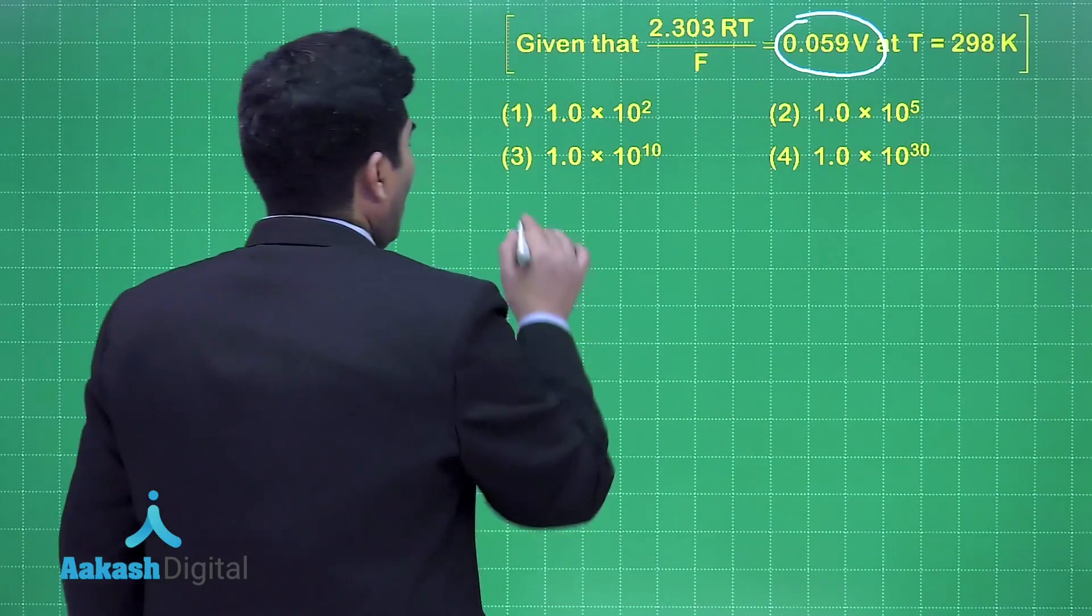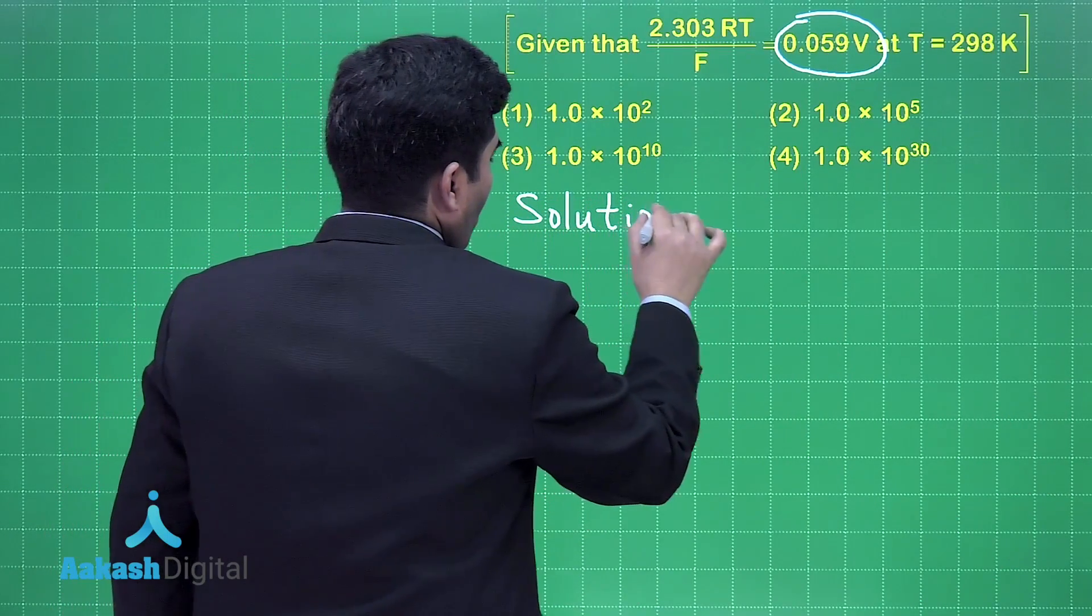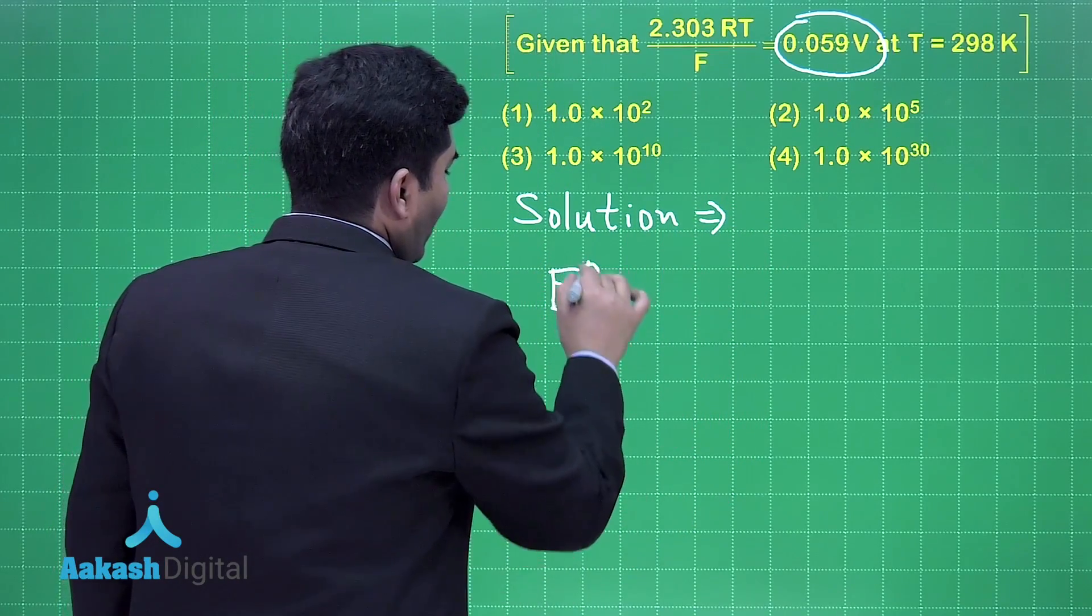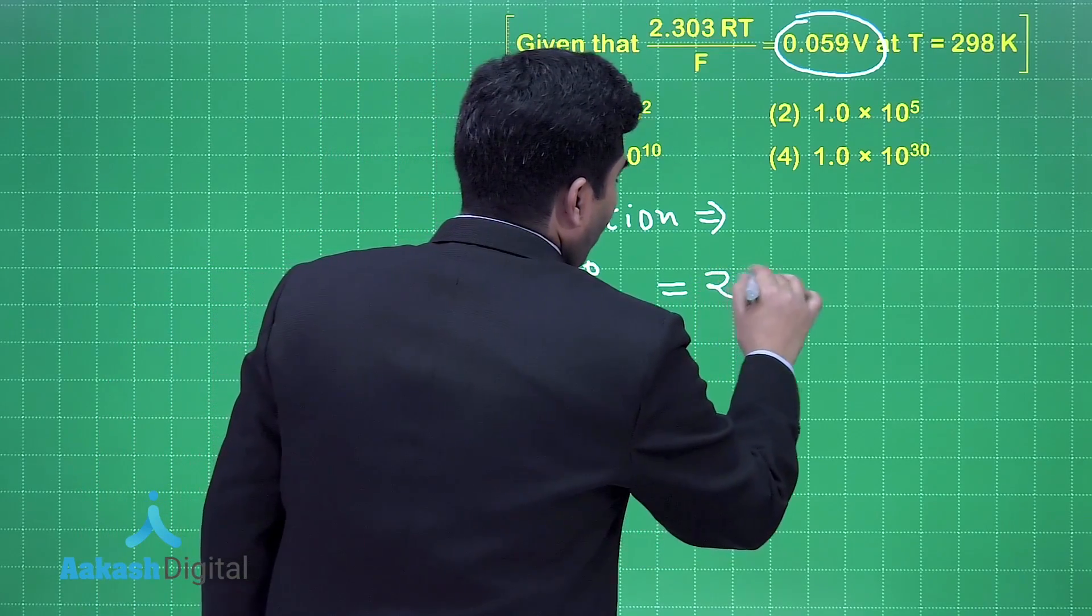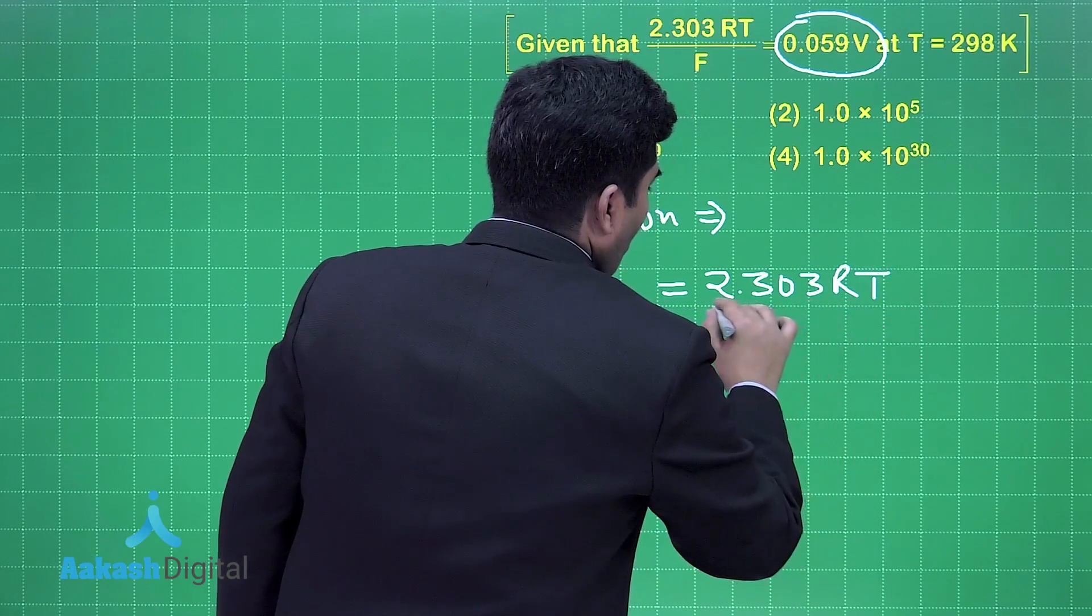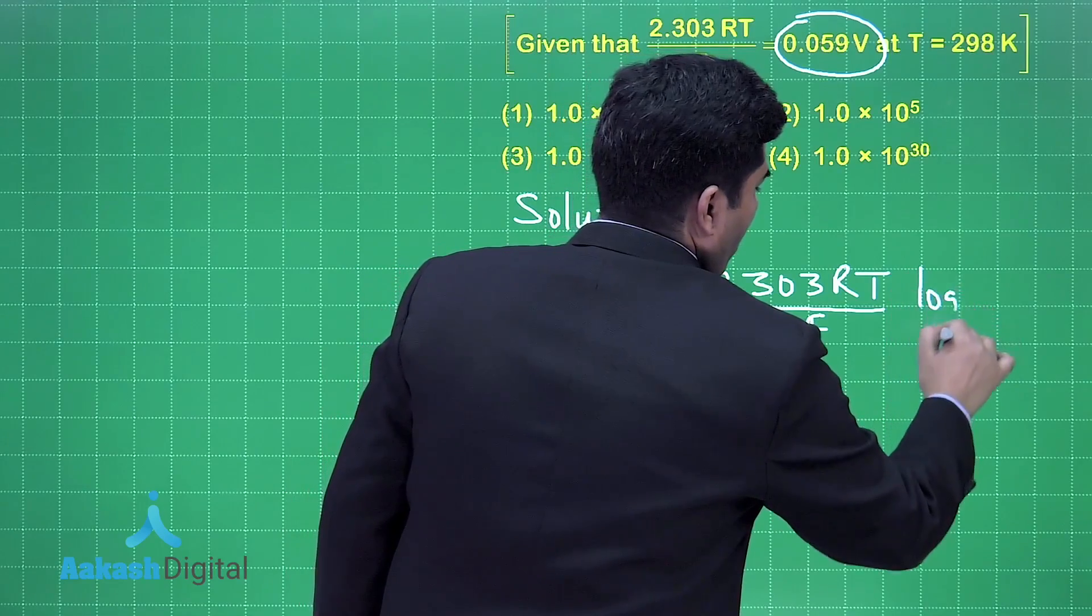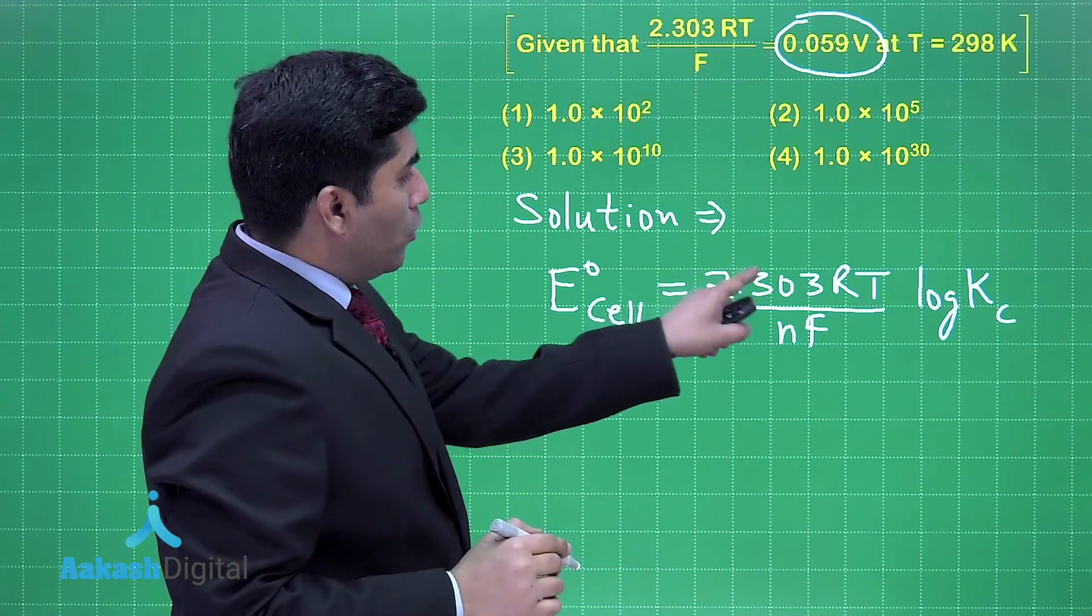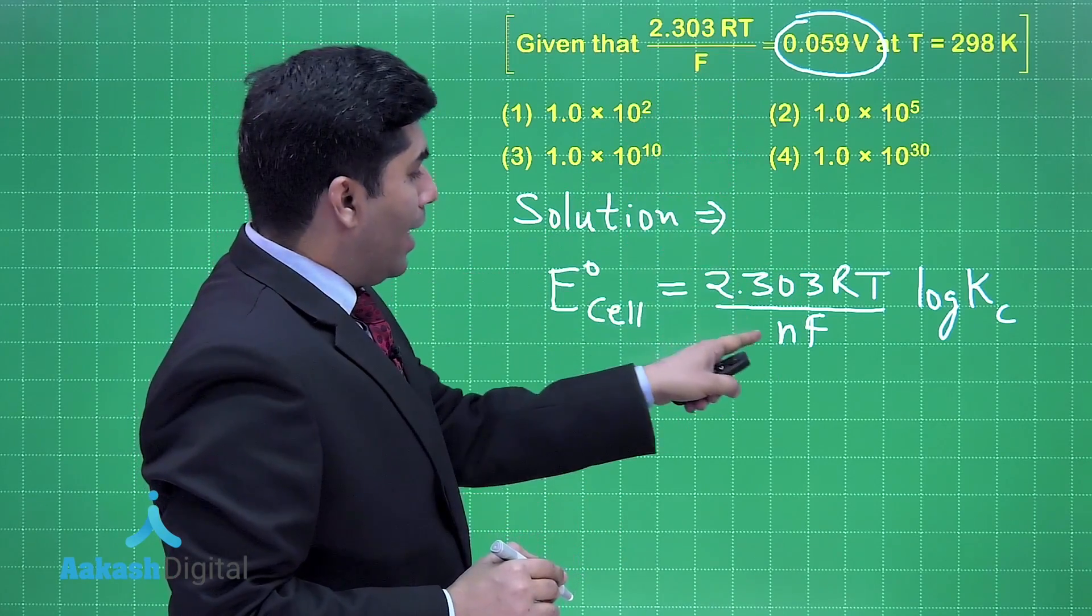For this we have a direct formula: E°cell = 2.303RT/(nF) × log Kc. Now 2.303RT/F is given to us, that is 0.059, and n = 1.